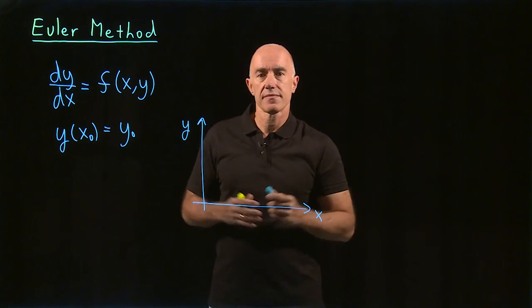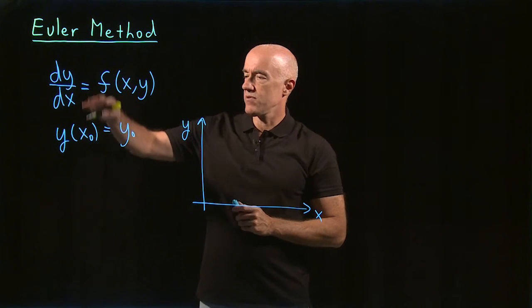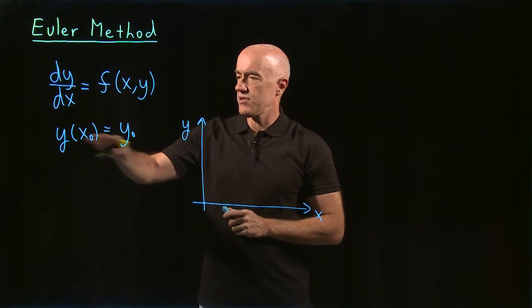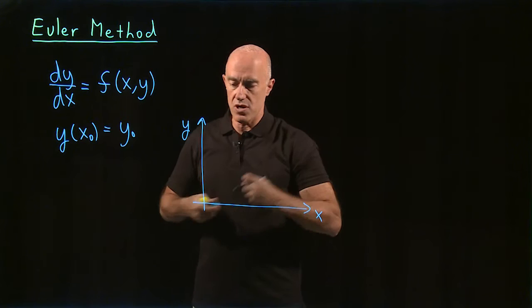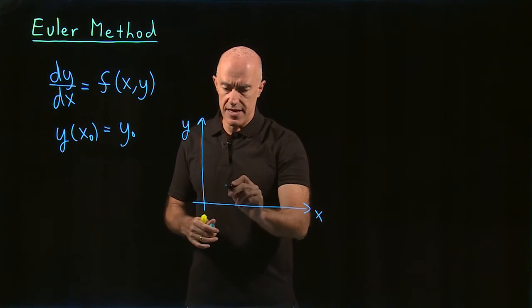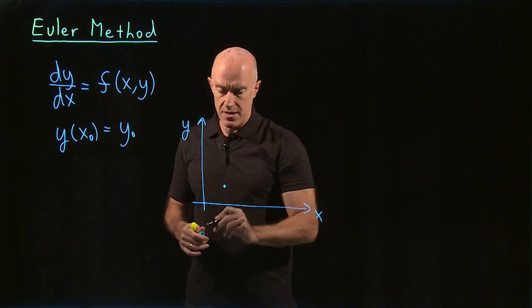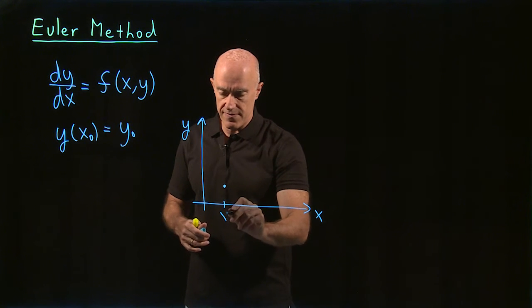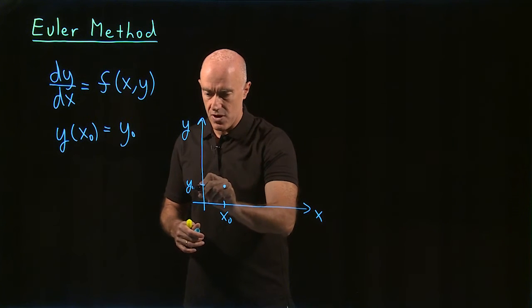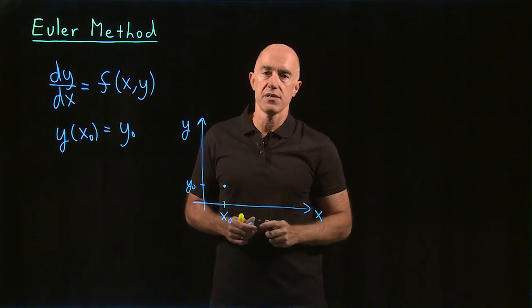What do we know? So the information we're given here is that we start with the initial value. So we know that y of x naught equals y naught. So we know one point on this graph. So let's say that it's here. So this is the value of x naught and this is the value of y naught. So that's the initial condition.